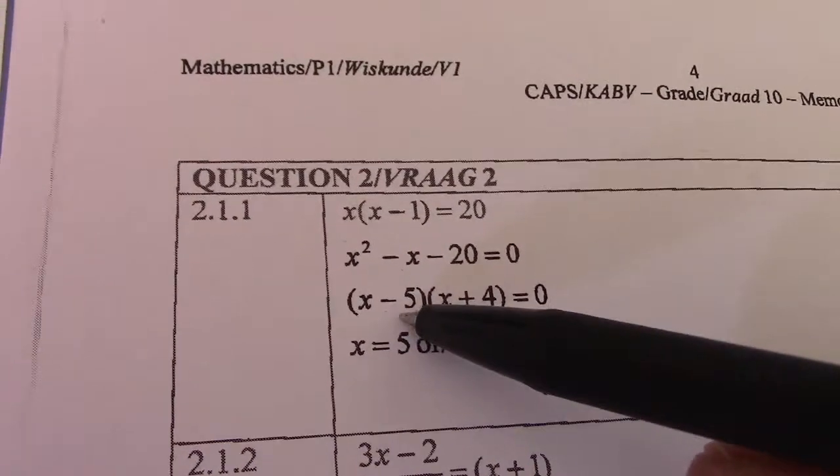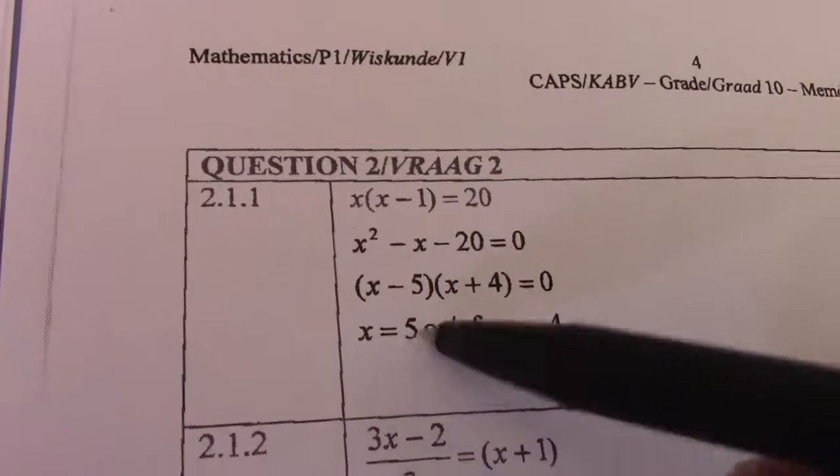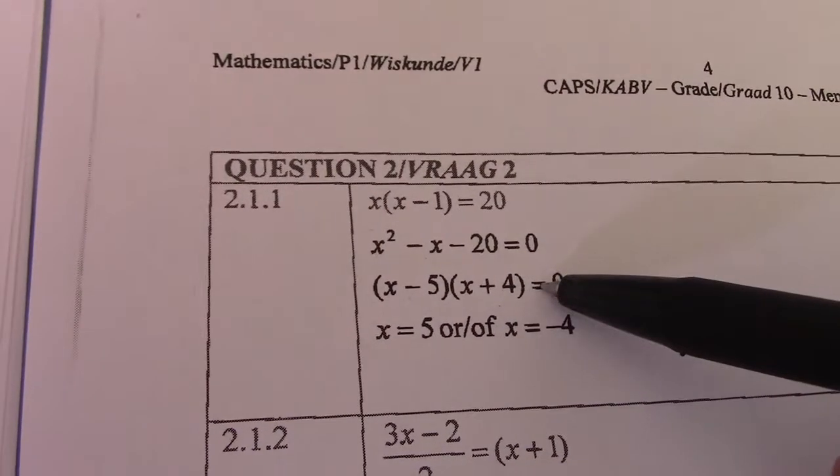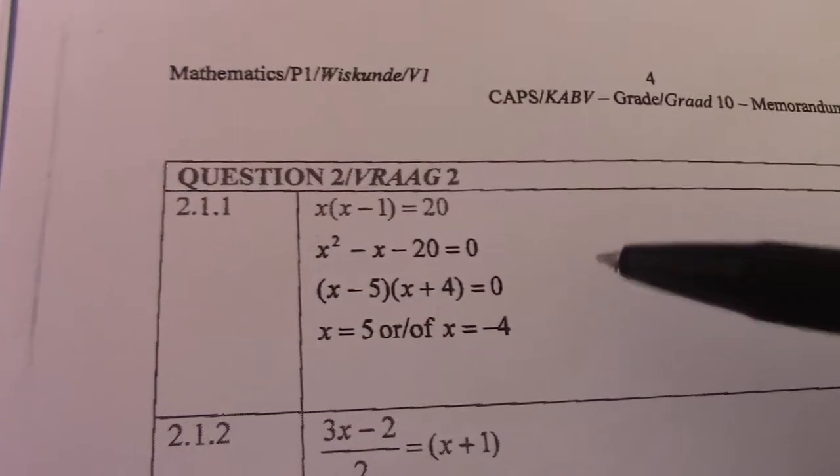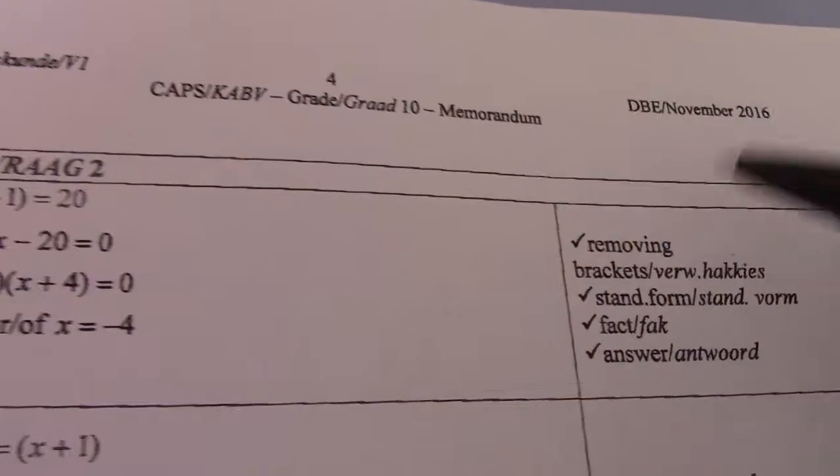So if I simplify x minus 5 equals 0, take negative 5 across and x equals positive 5. x plus 4 equals 0 gives x equals negative 4. That's a basic factorization, first requiring distributive law.